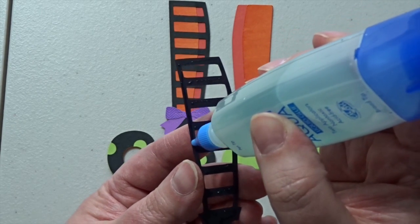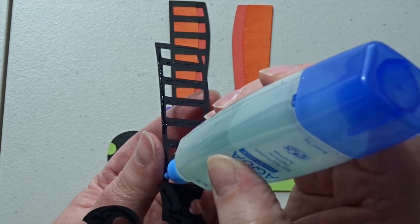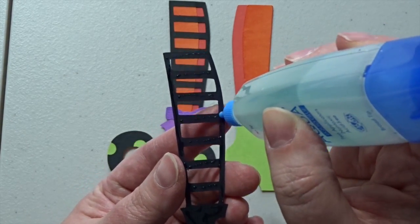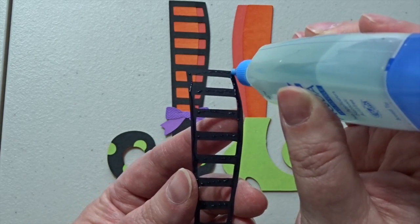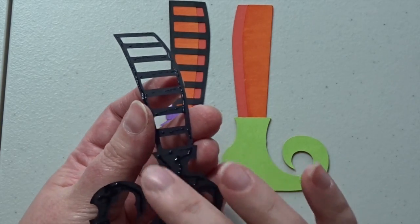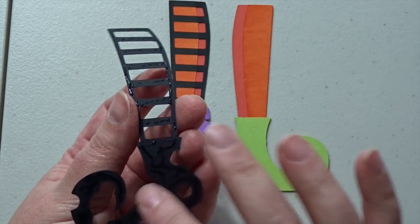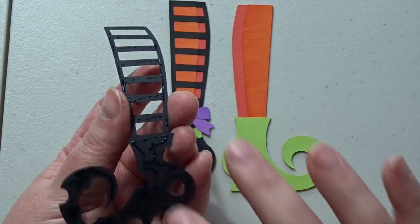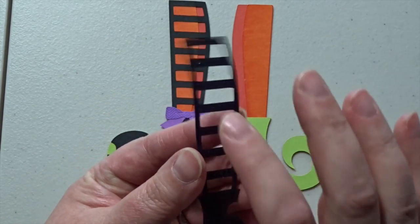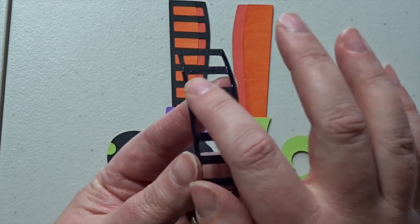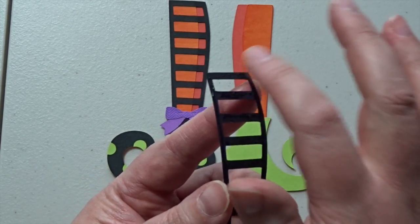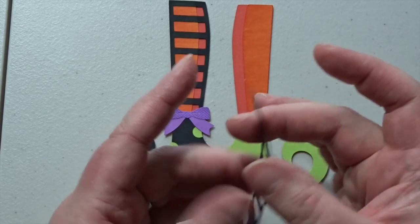And I know my daughter dressed up as a witch at least one year for Halloween. So I can use these images with those photographs. That'll be really cute. All right. And then just kind of tap a little at this glue in case there's some bigger splotches. All right.